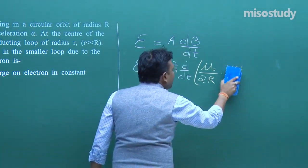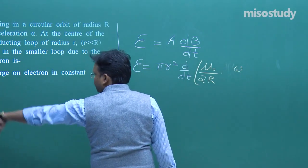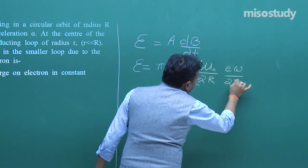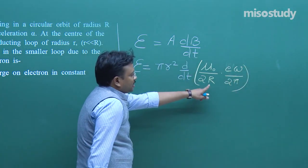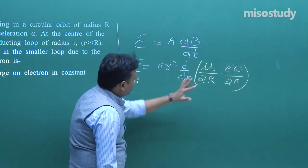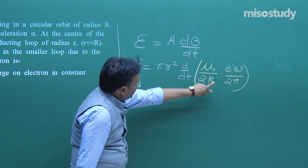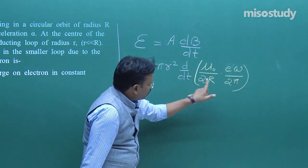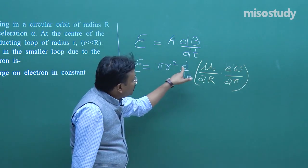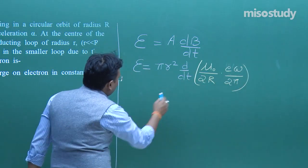Let's use e as given in the problem. The formula gives e/(2π) as the basic result — that's why I've marked it in a different color. Now imagine the situation: what is changing? μ₀ is not changing, e is not changing, 2R and 2π are all constants. What is changing is ω, the angular velocity.